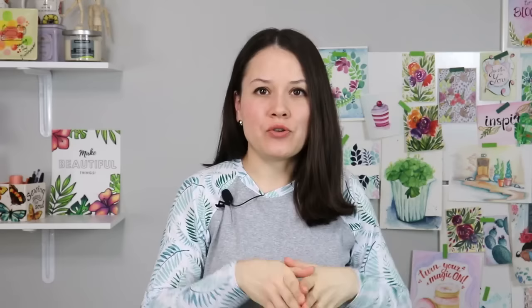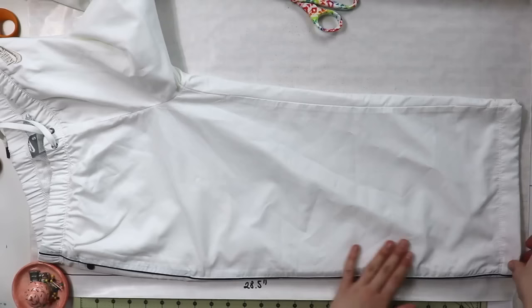The next thing to do is to make sure that you lay down your pants on top of your pattern piece and match the side seam that you just drew with the side seam of your pants and the bottom hem that you just made with the bottom hem of the pants as well.